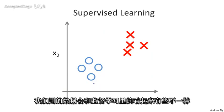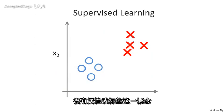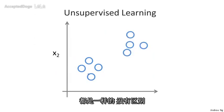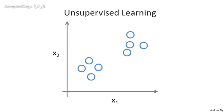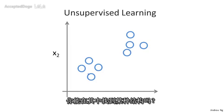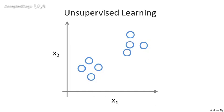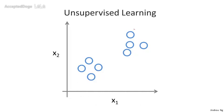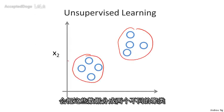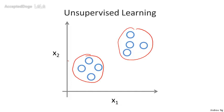In unsupervised learning, we're given data that doesn't have any labels — or really no labels at all. We're given a data set and we're not told what to do with it, and we're not told what each data point is. Instead, we're just told: here is a data set, can you find some structure in the data? Given this data set, an unsupervised learning algorithm might decide that the data lives in two different clusters, and break this data into two separate clusters. This is called a clustering algorithm.